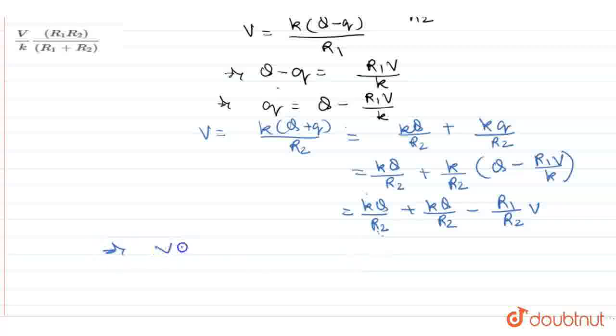Bringing the V terms together, V(1 + R1/R2) will be equal to kQ/R2 + kQ/R2, which equals 2kQ/R2.